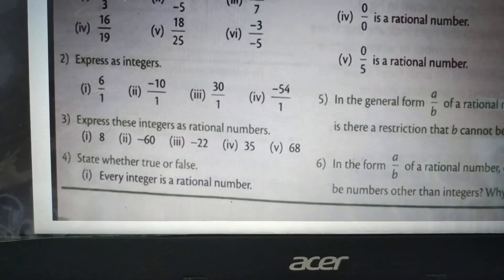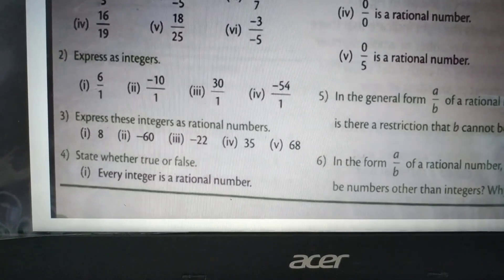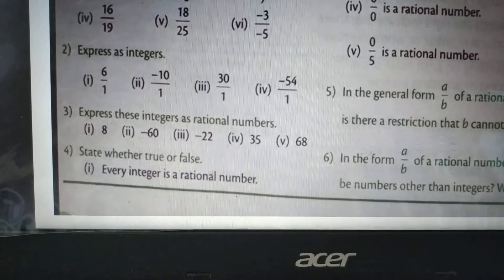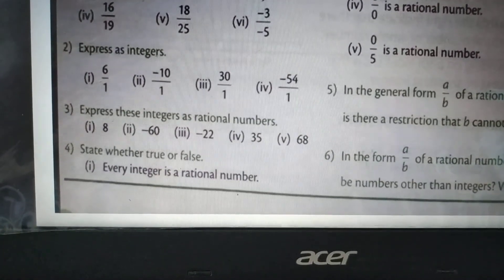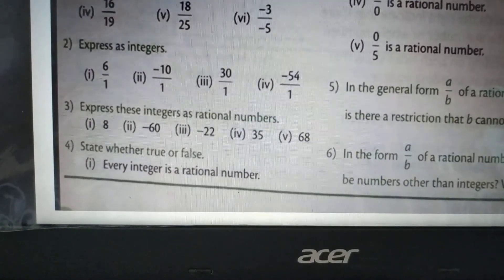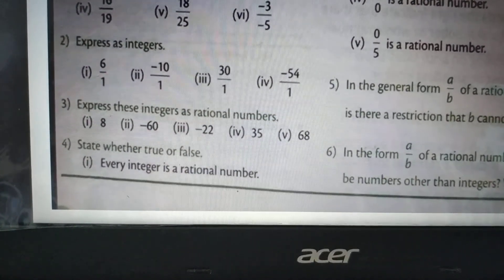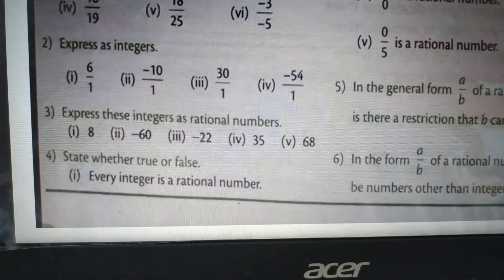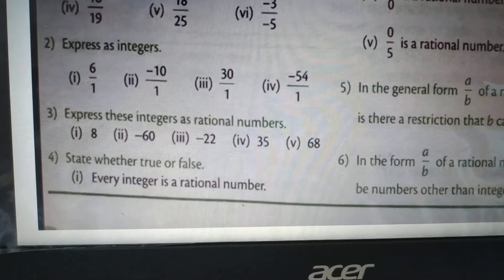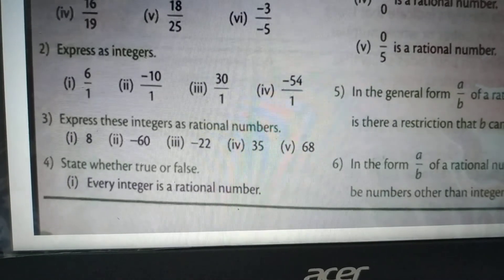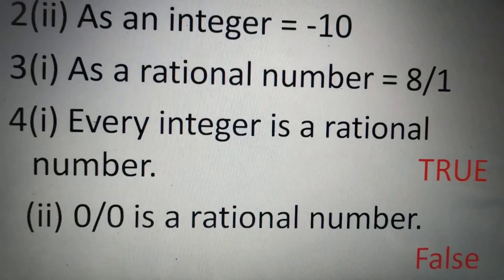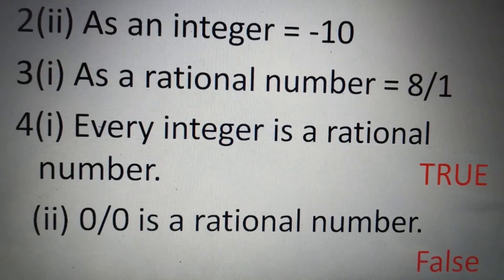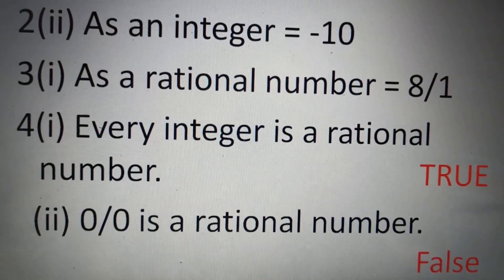Question 4, first part: say whether the statement is true or false — 'Every integer is a rational number.' We already know that every integer is a rational number. So it is true. The answer for Question 4 first part is true.